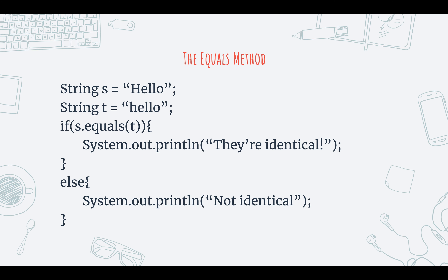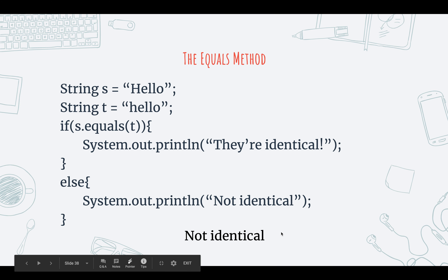Let's look at another example. We have string s equal to 'hello' with an uppercase H, and string t also equal to 'hello' but all lowercase characters. When we invoke the equals method of string s, it's going to return false, and then it's going to execute the else statement since the if statement has to be true in order to execute. And since this if statement is not true, it goes to the else statement and prints out 'not identical'.